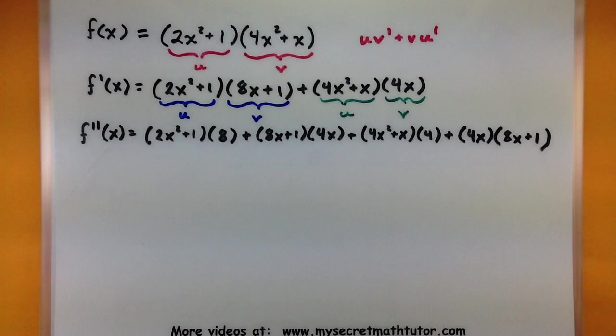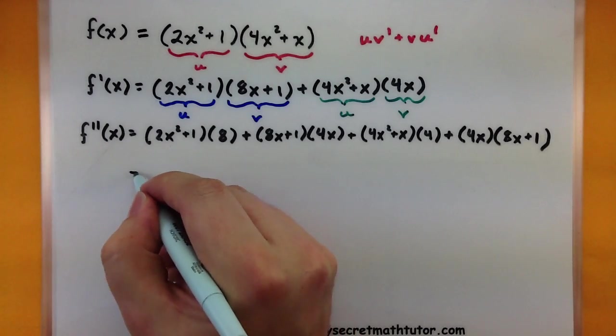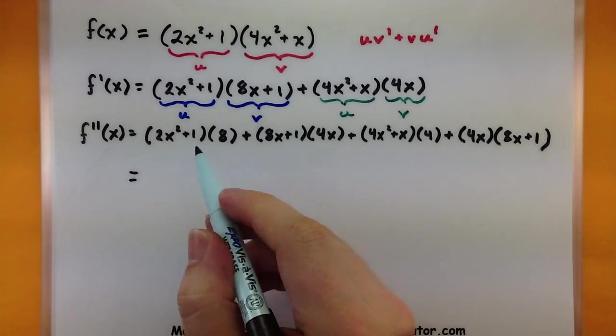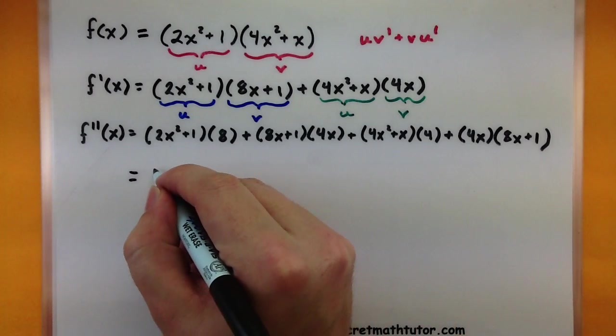So we've actually found two derivatives. And all you would really have to do from here is start cleaning things up a bit. Maybe by distributing and combining as many terms as possible. Let's go ahead and do that just so we can finish the problem.